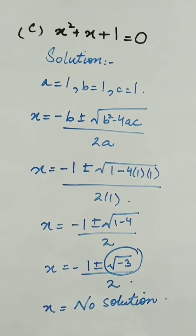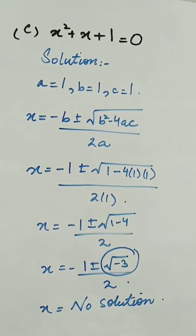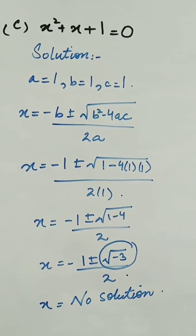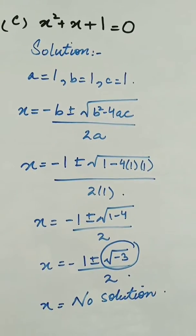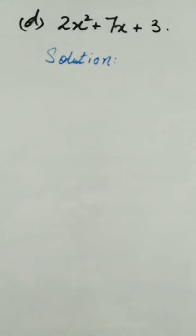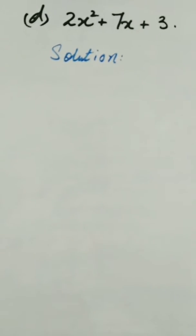We can say that there is no solution of this equation, as the discriminant b squared minus 4ac becomes negative. So we can say that there is no solution of this equation.